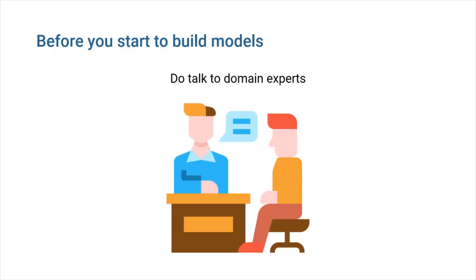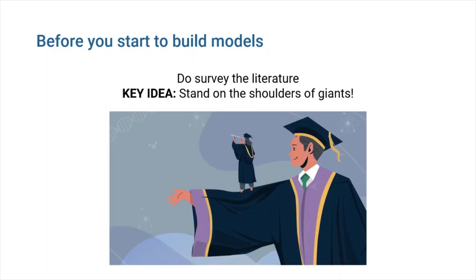Do talk to domain experts. Domain experts can help you understand which problems are useful to solve, and can also help you choose the most appropriate feature set and ML model to use. Failing to consider the opinion of domain experts can lead to projects which don't solve useful problems or which solve them inappropriately. Do survey the literature. You're probably not the first person to apply ML to a particular problem domain, and it's important to understand what has and hasn't been done previously. Do a literature review before you start work, or you'll be left scrambling.